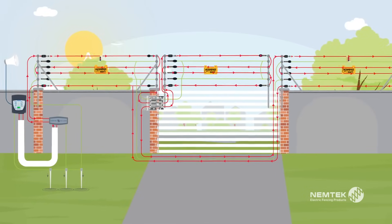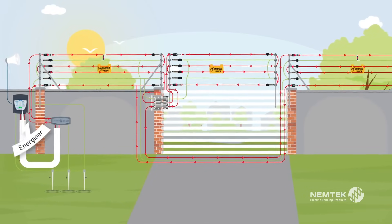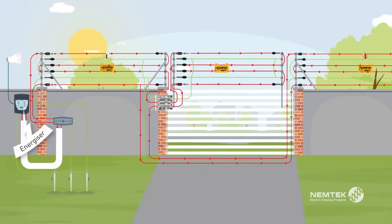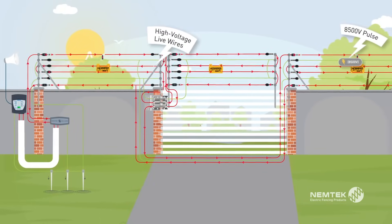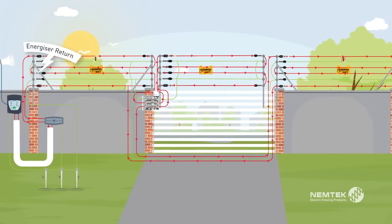A high voltage pulse is generated by the energizer, typically every second, travels through the live wires in a series loop and then returns to the energizer.